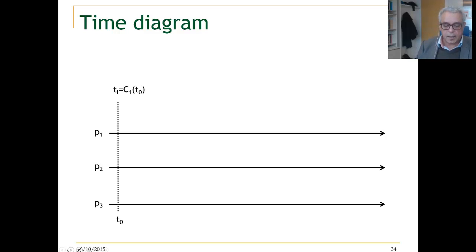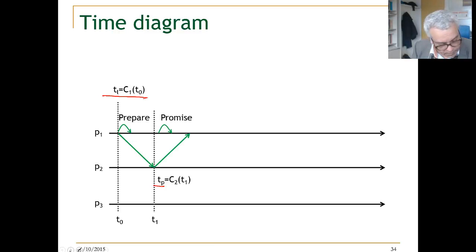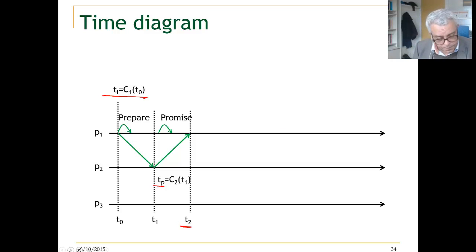Let us look again to this as a time diagram. This is TL, this is the time when the proposer sends a prepare. And this is Tp, this is a time when an acceptor sets his own clock. This is where you get a promise at T2.